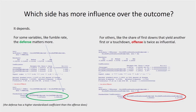Then we have to assess which side — offense or defense — has more control over what's going to happen in a given statistic. That ratio is different for every statistic. For something like fumbles, somewhat intuitively, the defense — which can force them — tends to matter a bit more, as you can see from the standardized coefficients where a bigger number means that variable has more importance. For others, like converting first downs into new first downs, the offense is about twice as important.